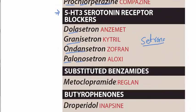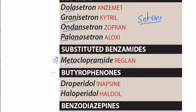Then we have substituted benzamides, in which we have metoclopramide. And then we have butyrophenones; in the butyrophenones we have the '-peridols,' and in the peridols we have droperidol and haloperidol.